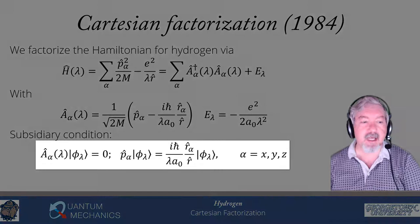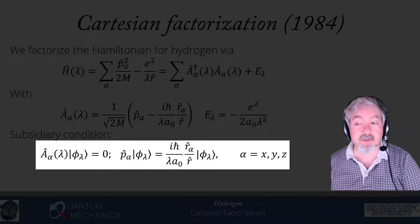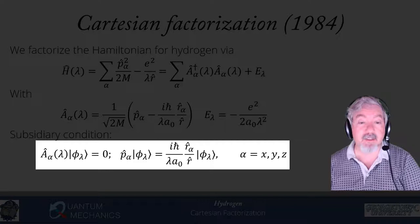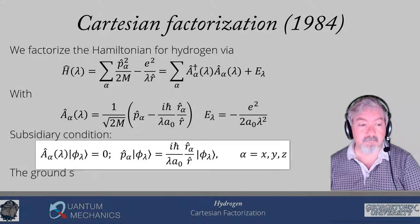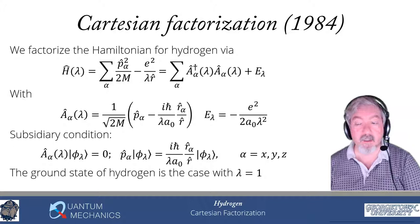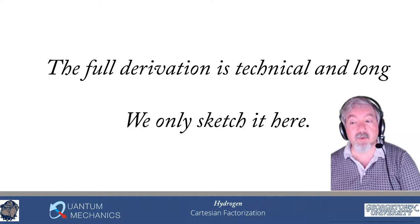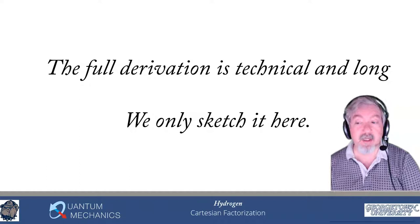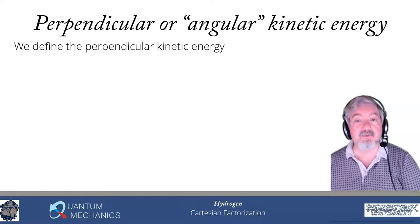The subsidiary condition is that a_alpha(λ) acting on φ_λ equals zero for every alpha — three subsidiary equations corresponding to p_alpha acting on φ_λ equals iℏ/(λa_0) times r_alpha/r times φ_λ. The ground state of hydrogen is the case where λ equals 1. The full derivation for wave functions is technical and long, so I'll only sketch it here.